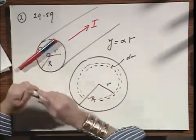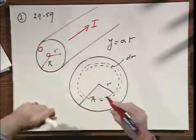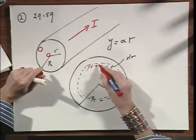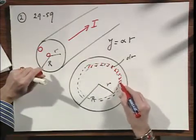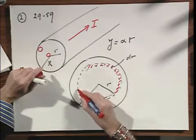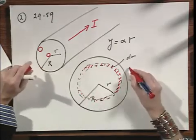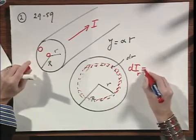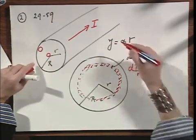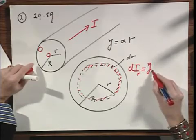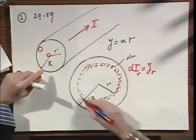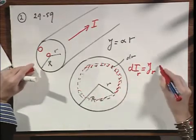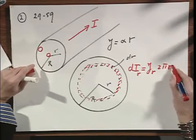And I would like to calculate now with you what is the current going through this ring, so to speak. Well, that current dI at that location r must be J at that location r times the surface area of the ring, which is 2πr dr.